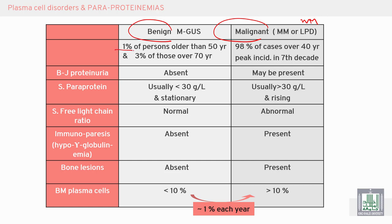MGUS prevalence is 1% of persons older than 50 and 3% of persons over 70. In malignant disease, the majority of cases occur over 40 years with peak incidence over 70 years. Bence Jones proteinuria is present in malignant disease but absent in MGUS. Serum paraprotein is more than 30 g/dL and rising in malignant disease, while in MGUS it is usually less than 30 g/L and stationary.